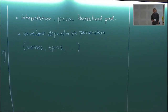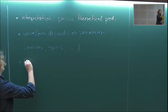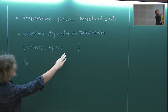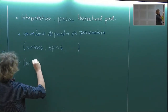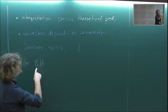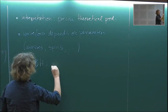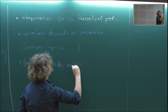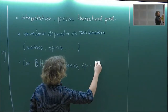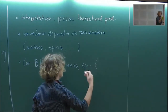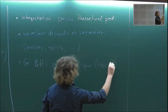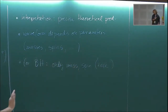For black hole binaries, as you'll hear in some lecture on black holes this week — for black holes, you just have masses and spins, plus possibly orbital eccentricity, and the extrinsic parameters.